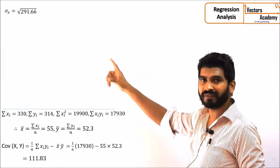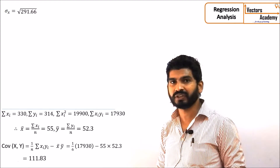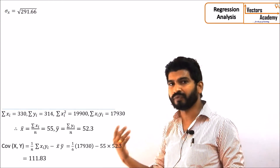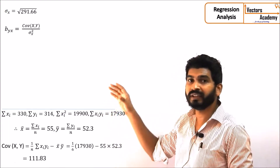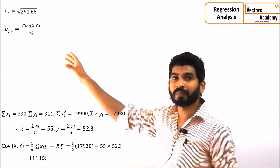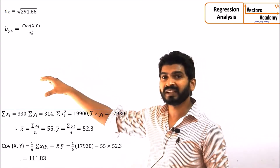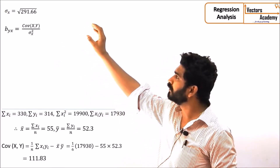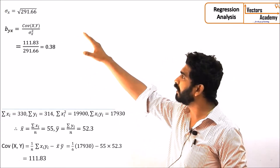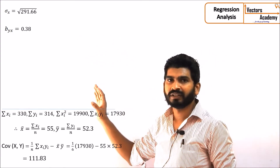Once we know the standard deviation and the covariance, we can find out the regression coefficient of y on x. We are finding the regression coefficient of y on x because we need to predict the values of y which depend upon the values of x — we need to predict the yield when we know the fertilizer used. By dividing the covariance by the standard deviation, we will get the regression coefficient.